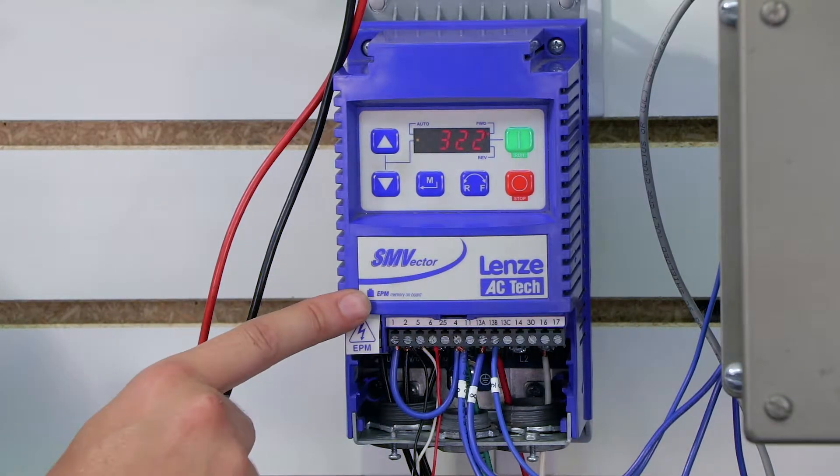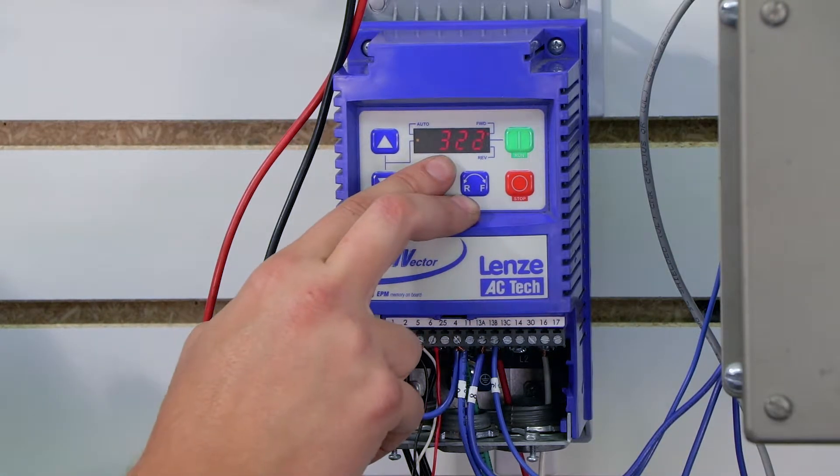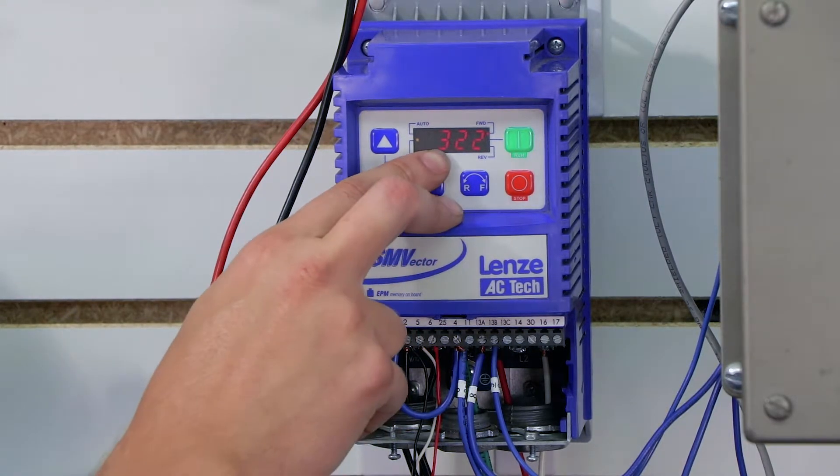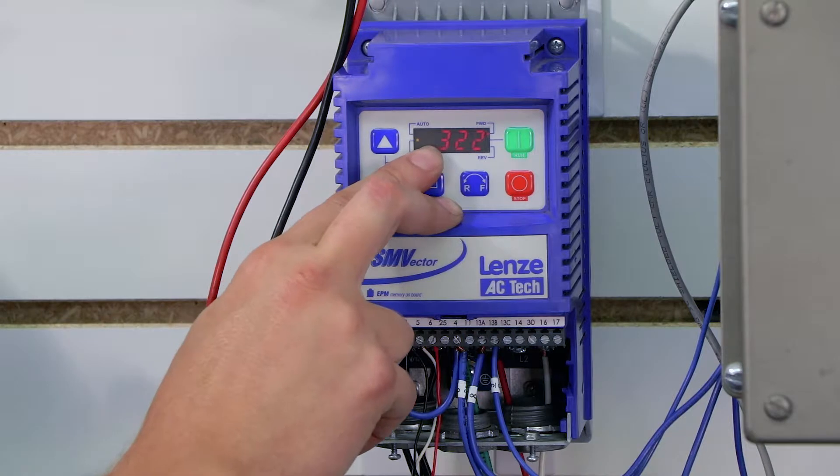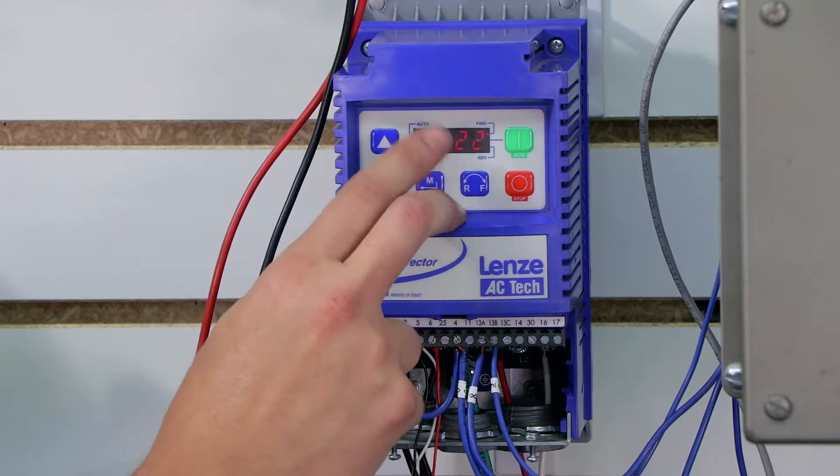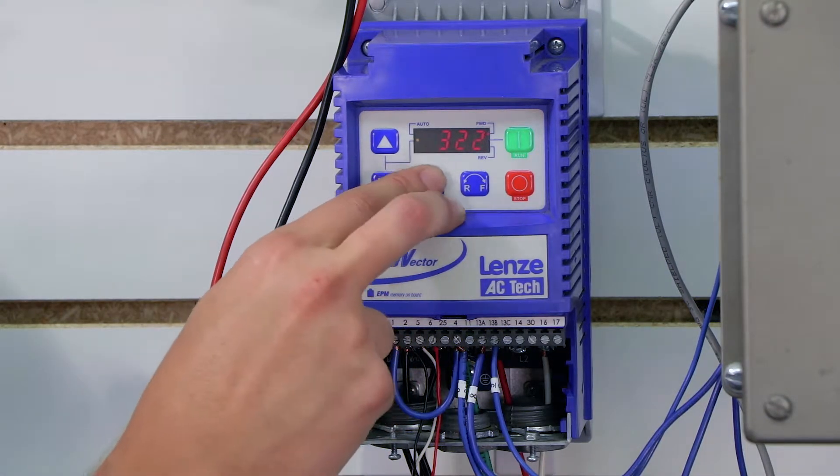The important thing to take away from this is this value should always be about 1.4 times whatever you're putting into the drive. So if you're putting in 240 it should be 320, for 480 it should be around 670, and for 600 volts it's going to be around 800 volts. So basically do the math and make sure that that matches because this means the input section on your drive is at least working properly.